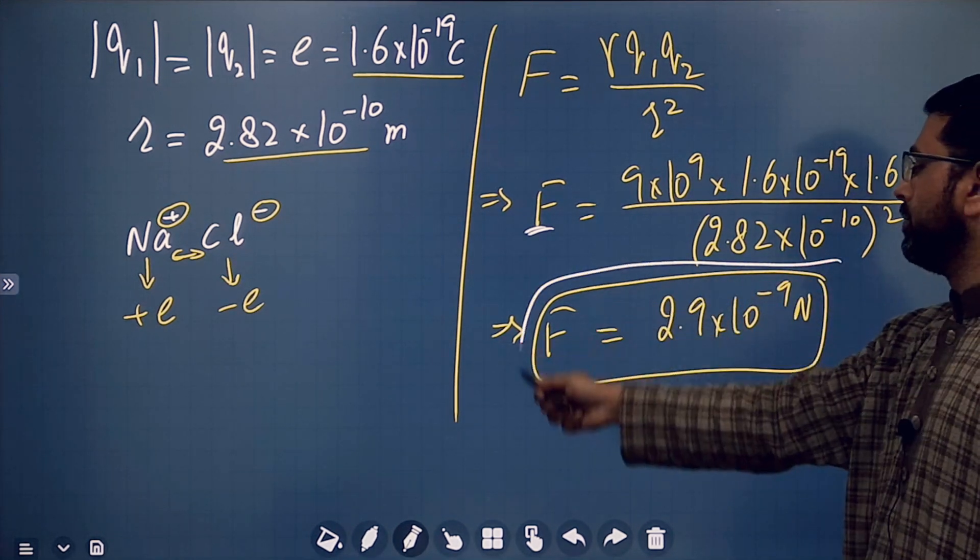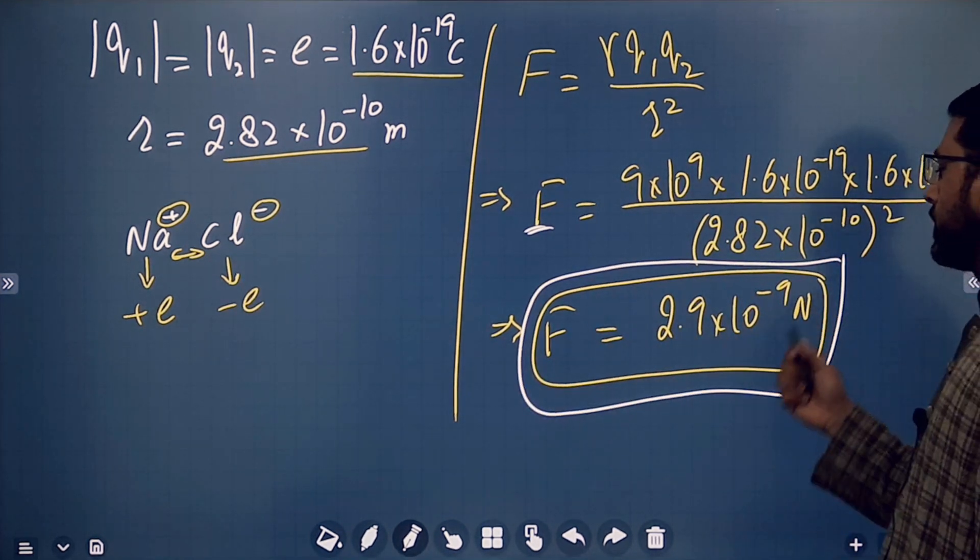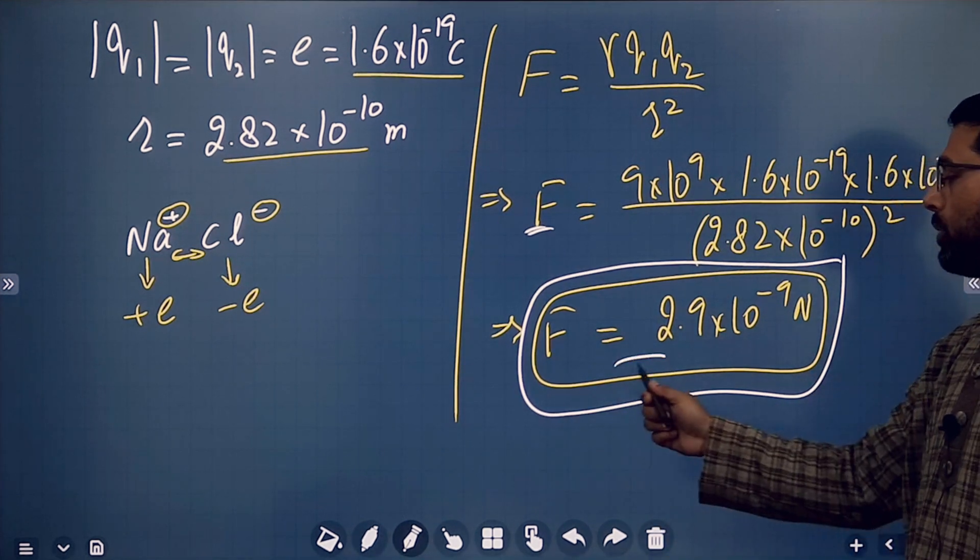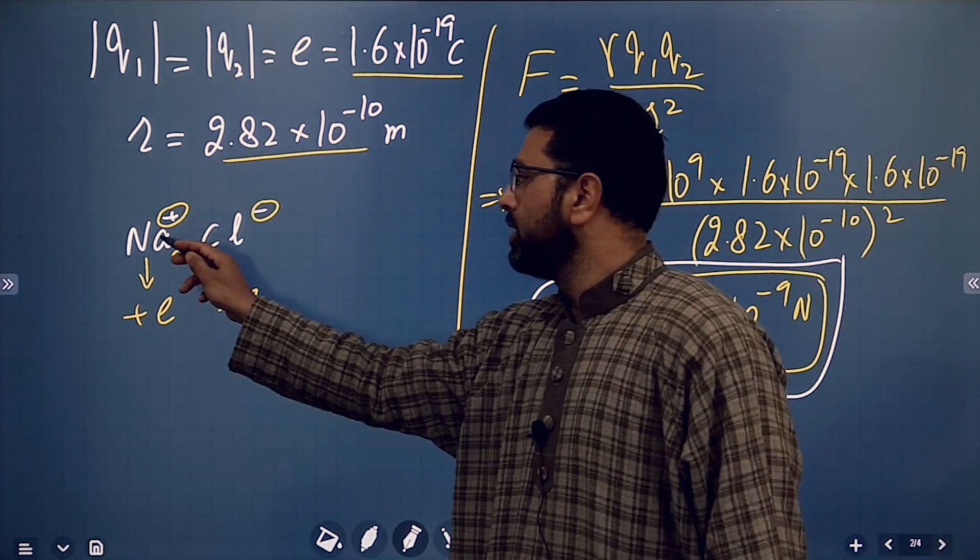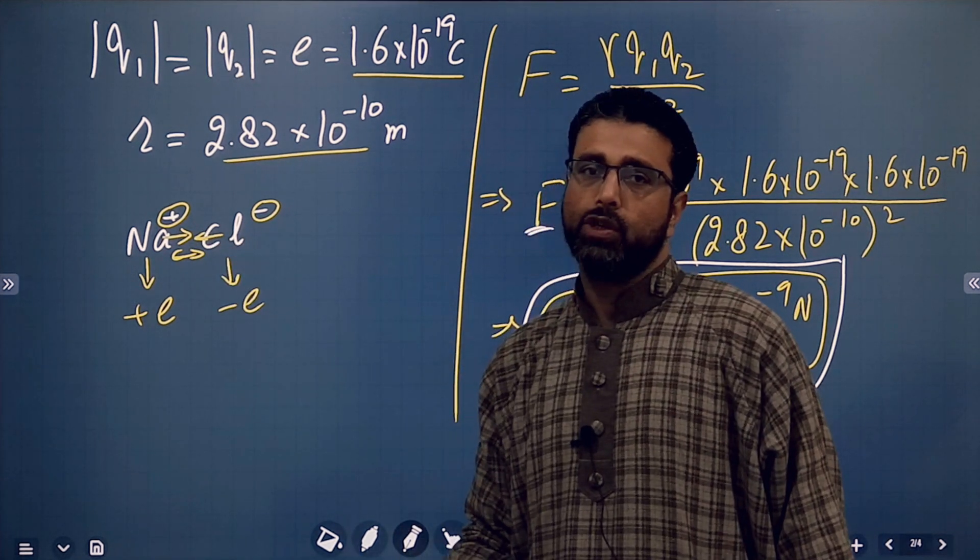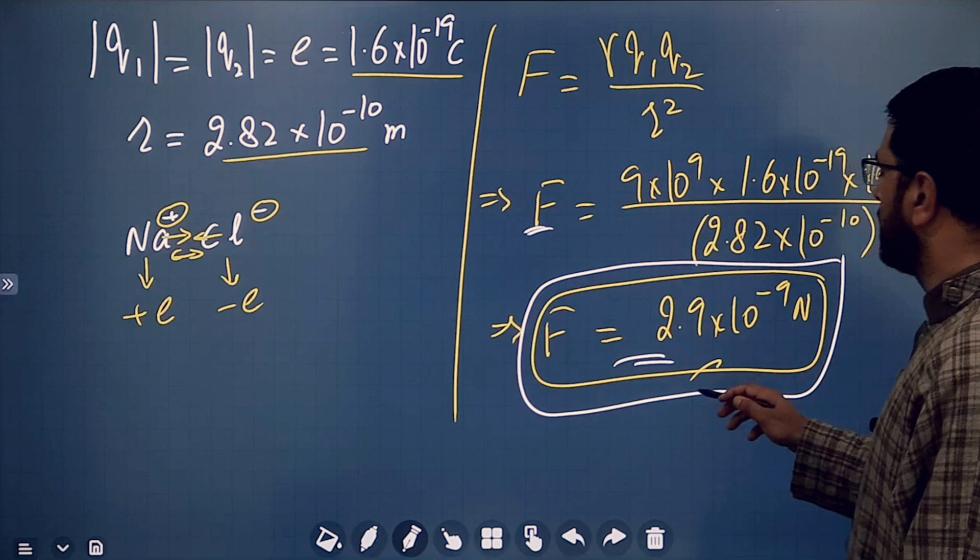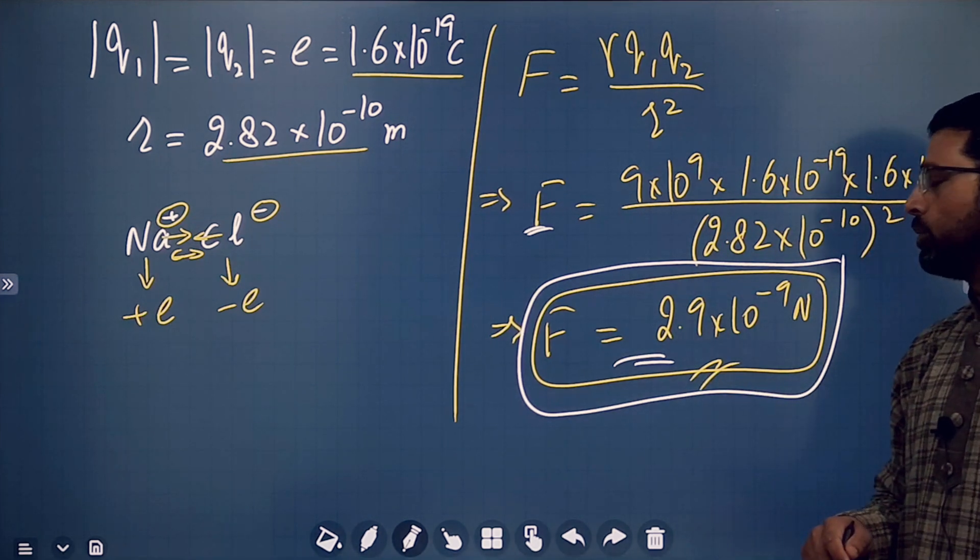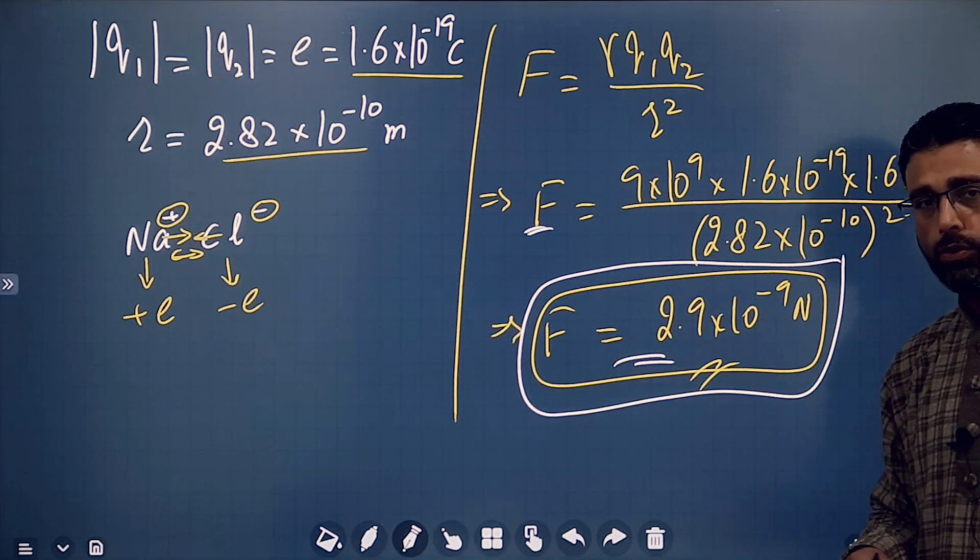10 to the power minus 9. So, 2.9 × 10^-9. This is the magnitude of the force. And direction, obviously, attractive in nature. Sodium will be attracted by the chlorine, chlorine will be attracted by the sodium. So, force is going to be attractive with this magnitude 2.9 × 10^-9 newtons.